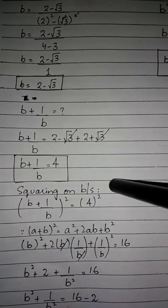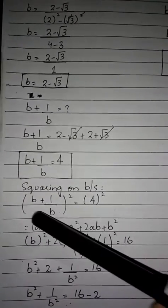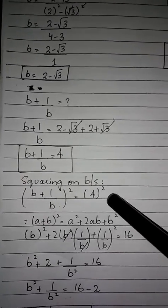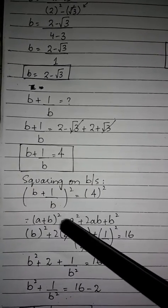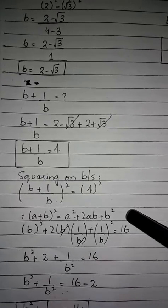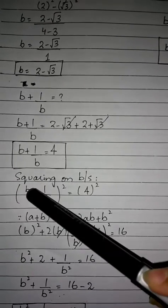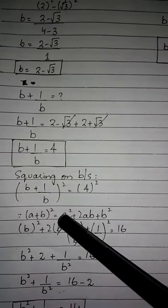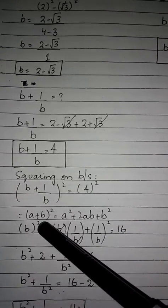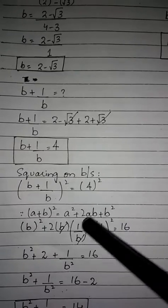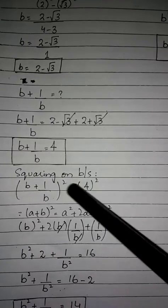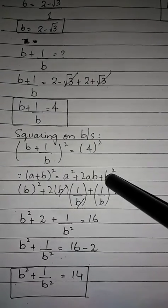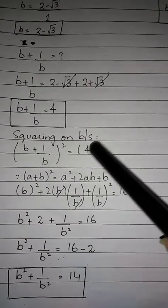Now we have squared both sides. Squaring gives us (b plus 1 over b) whole squared equals 4 squared. Using the formula (a plus b) whole squared equals a squared plus 2ab plus b squared, we expand: b squared plus 2 times b times 1 over b plus 1 over b squared equals 4 squared.